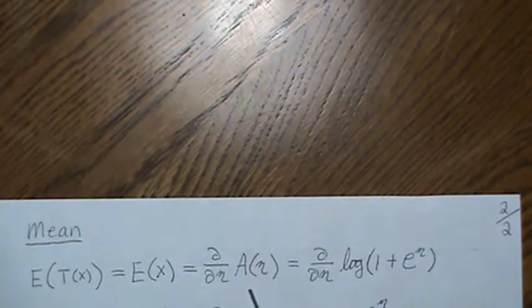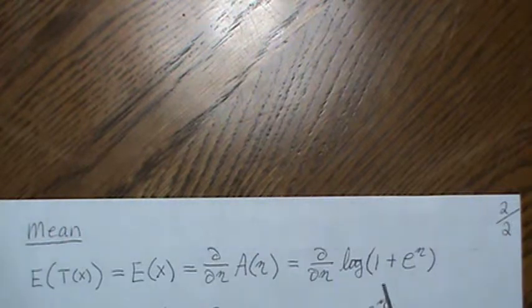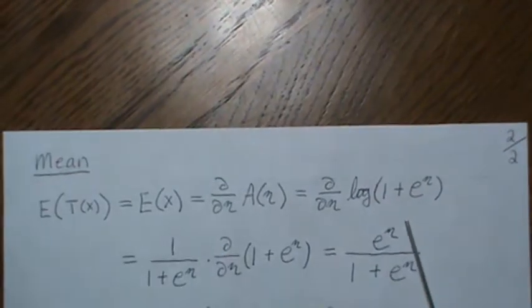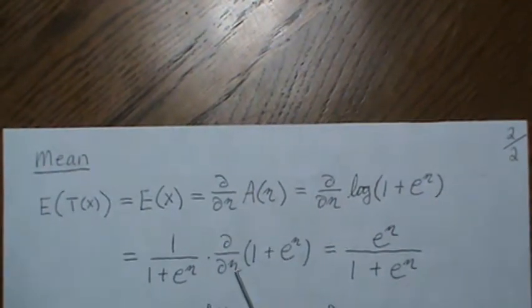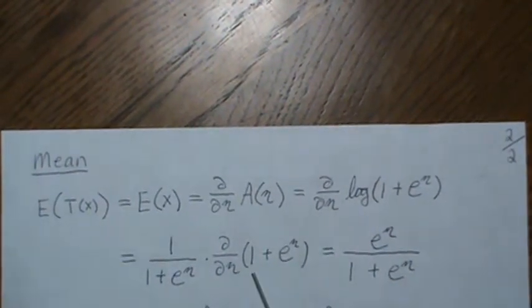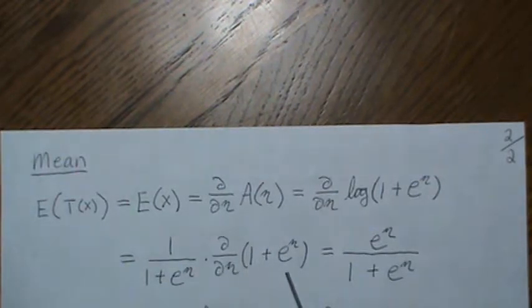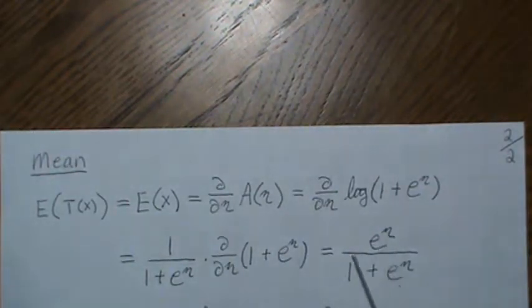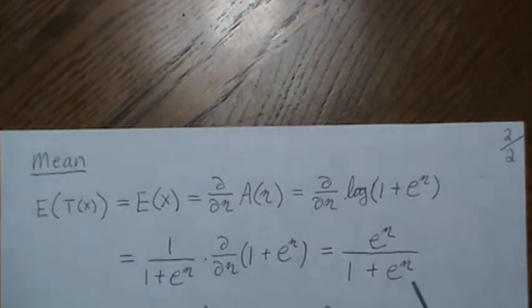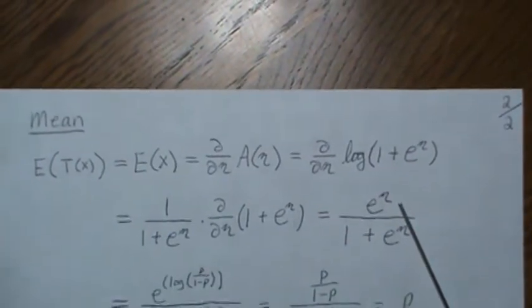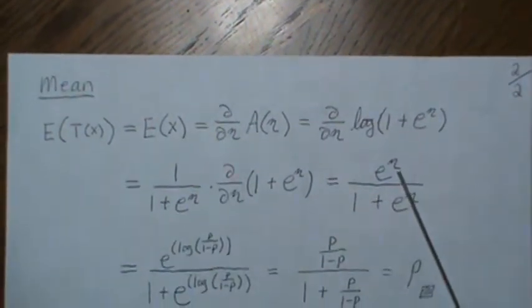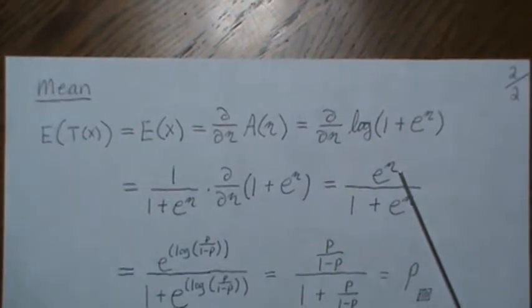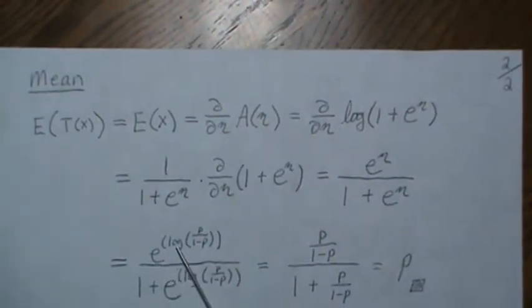And then, well, the log partition was this. So the derivative of a log of this is, it's one over that, and then times the derivative of this. And then that's zero and that's just e to the eta again. So we get this. Now we plug in what eta equals, and that was the log of p divided by 1 minus p.